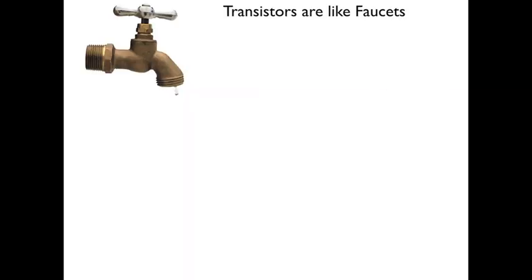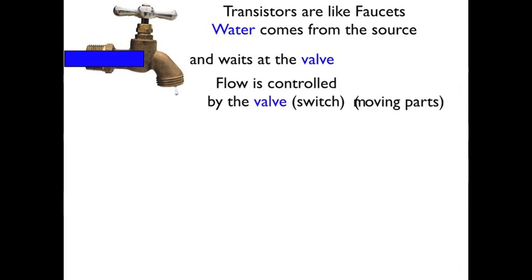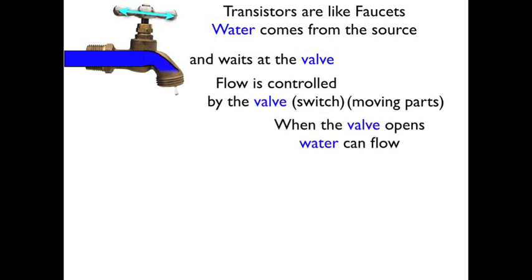Transistors are a lot like faucets. Water comes from the source in a faucet, and it waits at the valve. The flow is controlled by that valve, so you might say the valve is the switch. There's moving parts because you have to open that valve. When the valve opens, water then can flow.